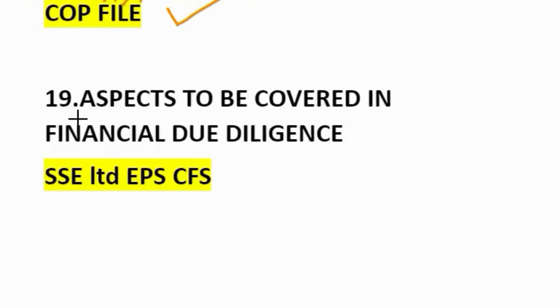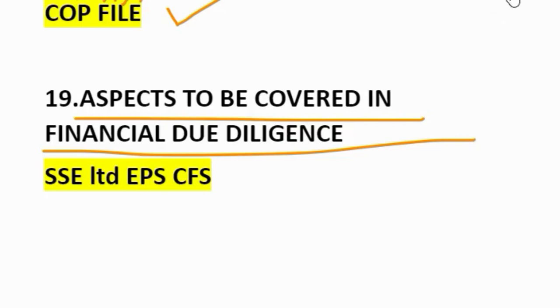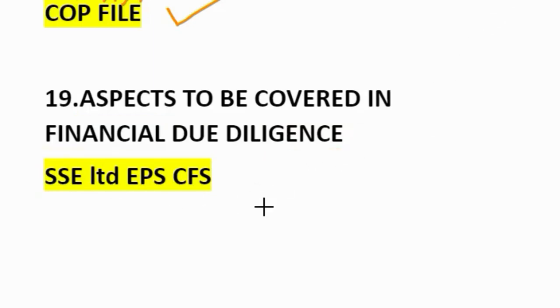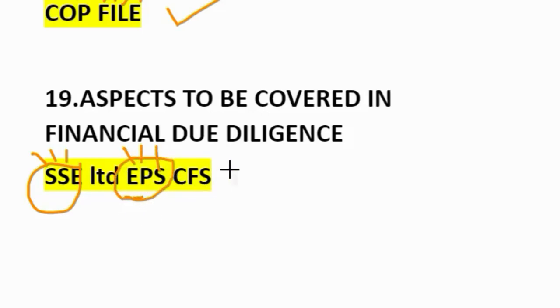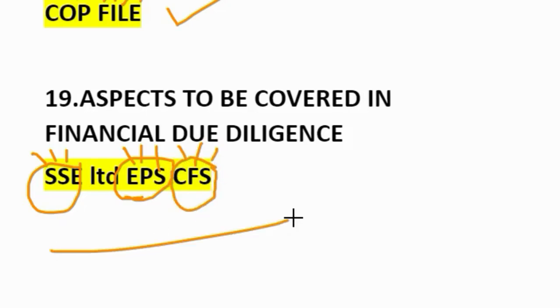Aspects to be covered in financial due diligence. How to remember? SSC Limited EPS CFS. S for studying the business history. Another S for significant accounting policies. E for examining profit and loss account. Another E for examining net worth. P for payment of taxes. S for studying the economic environment. CFS: C for cash flow, F for financial projections, S for statutory compliance. So SSC Limited EPS CFS.